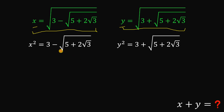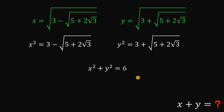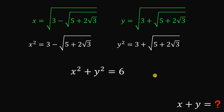Notice we have the same term with different signs. So what we're going to do is add these two equations. If we do that, we eliminate this term and we have x squared plus y squared equals 3 plus 3, or simply equal to 6. We found another equation in terms of x and y: x squared plus y squared equals 6. Let's set aside this result.